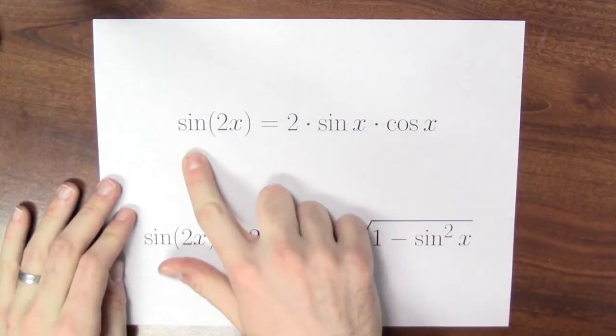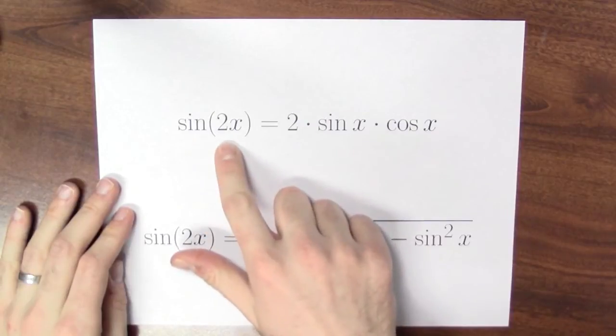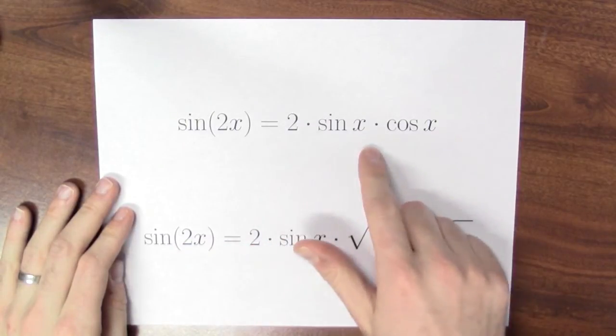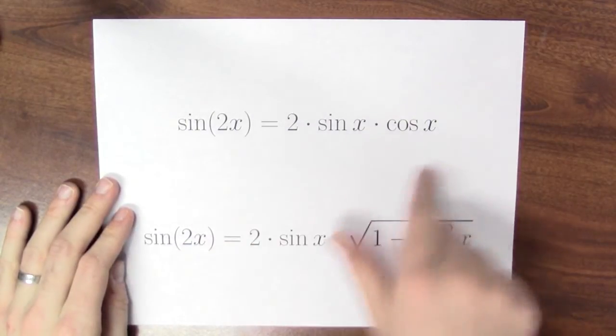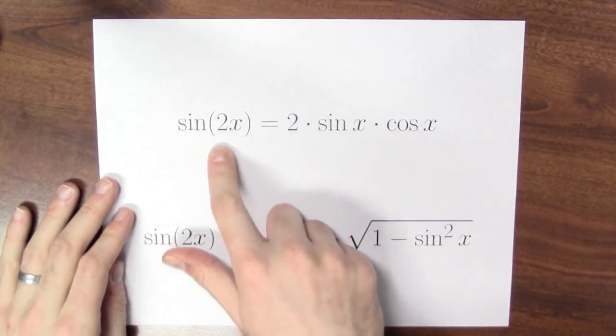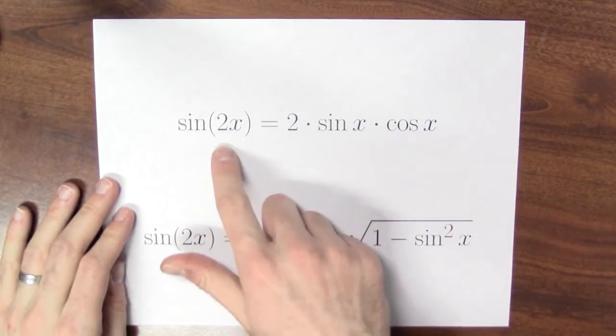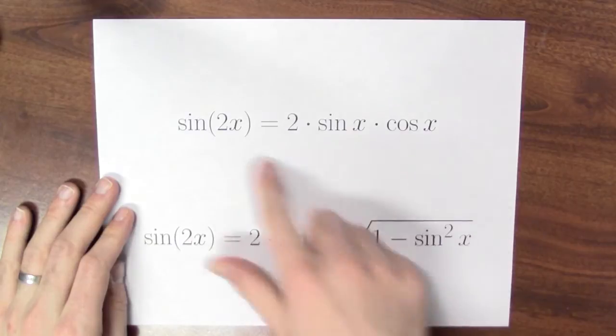In addition to this, we've also got a double angle formula. The double angle formula for sine says that sine of 2x is 2 times sine x times cosine x. You can derive this formula from the angle sum formula for sine. Sine of x plus x gives you this.